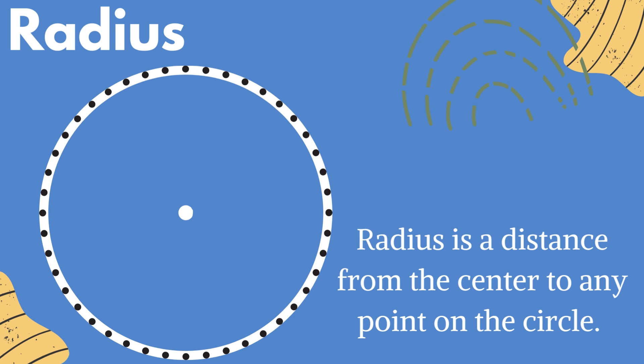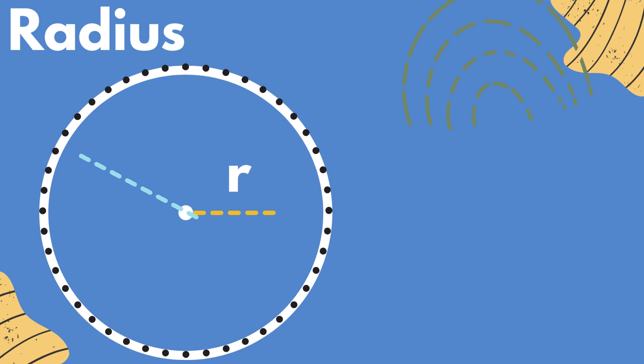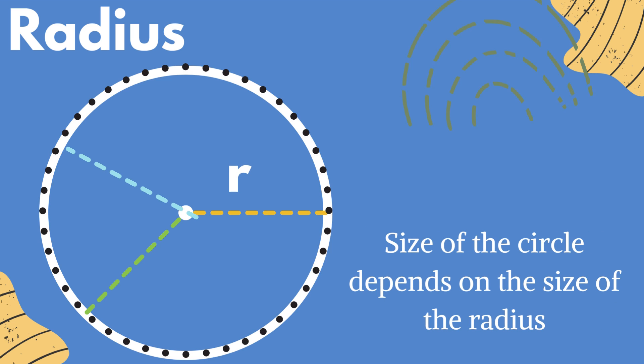Radius. Radius is a distance from the center to any point of the circle. The size of the circle depends upon the size of the radius. If radius is longer, the circle will be of bigger size. But if radius is shorter, it will create a smaller circle.